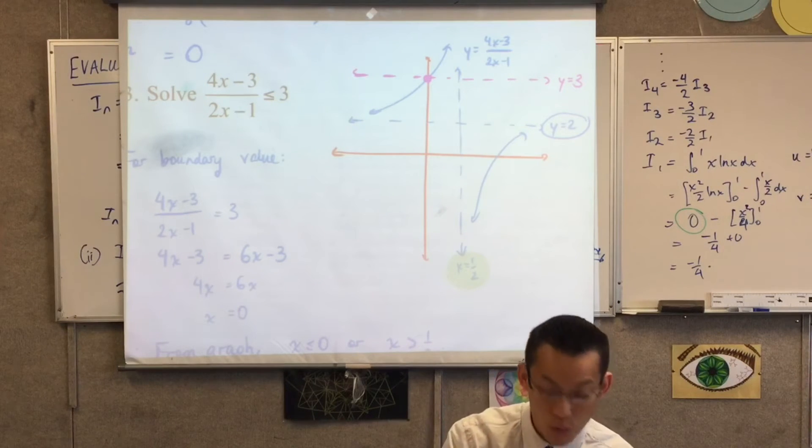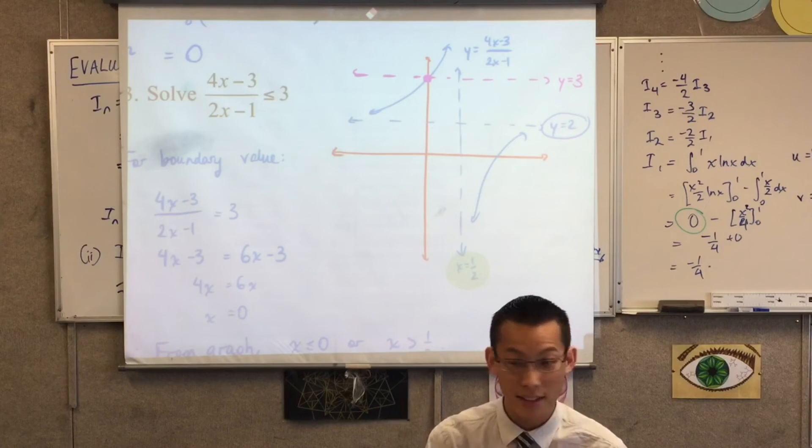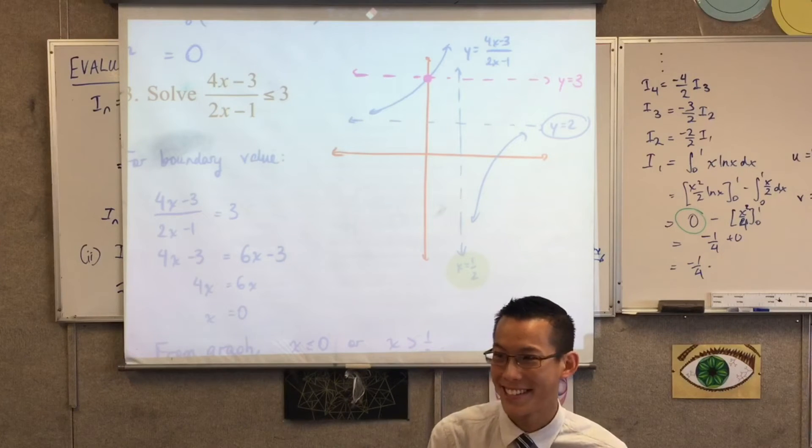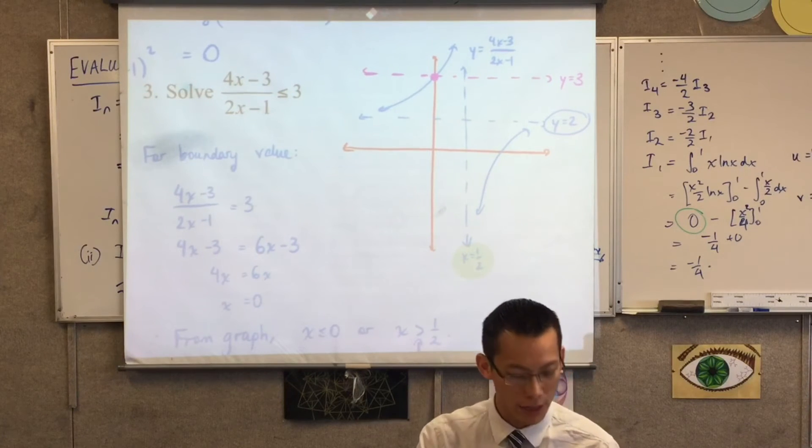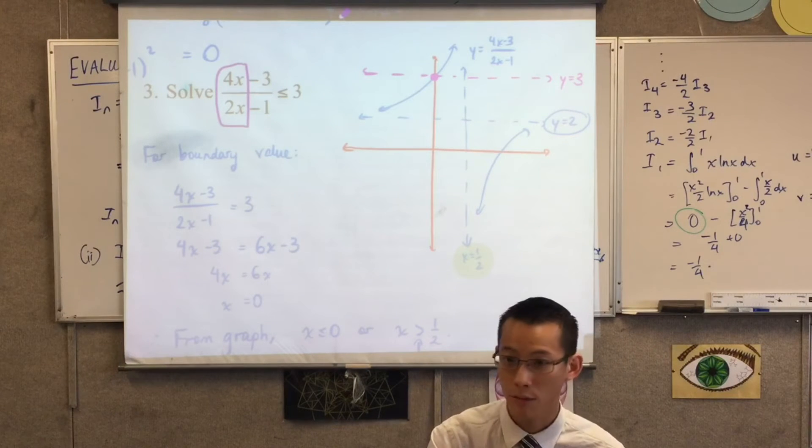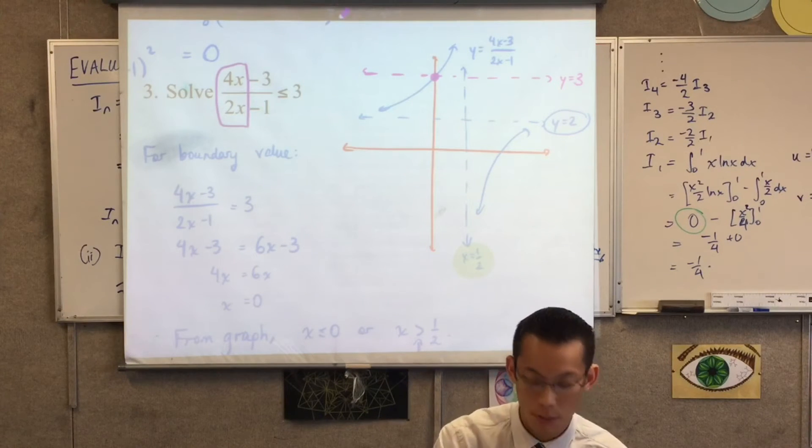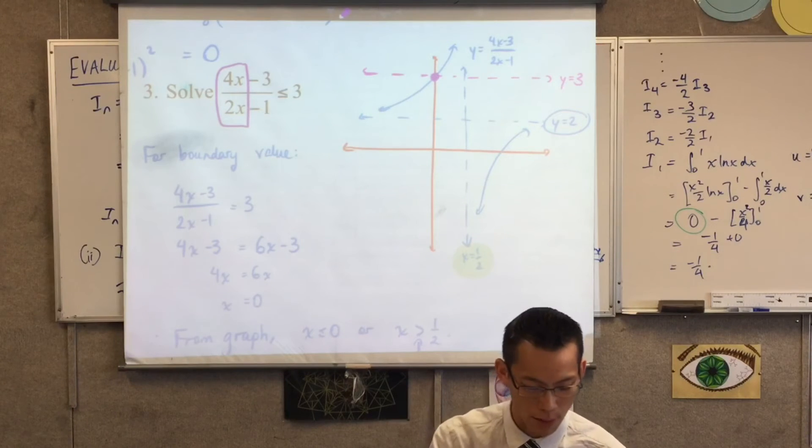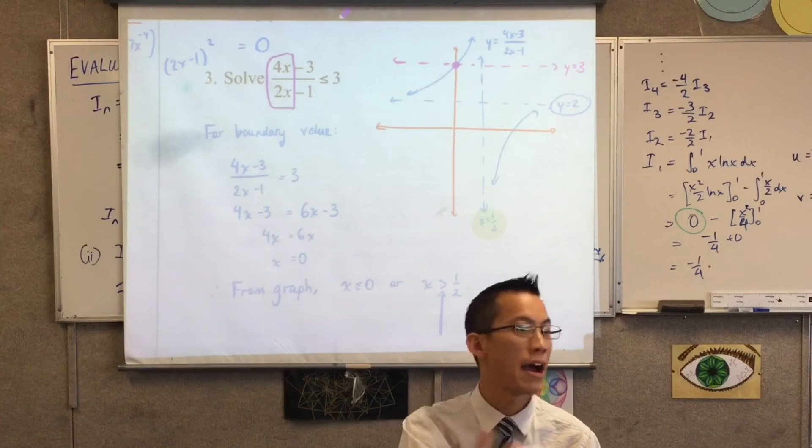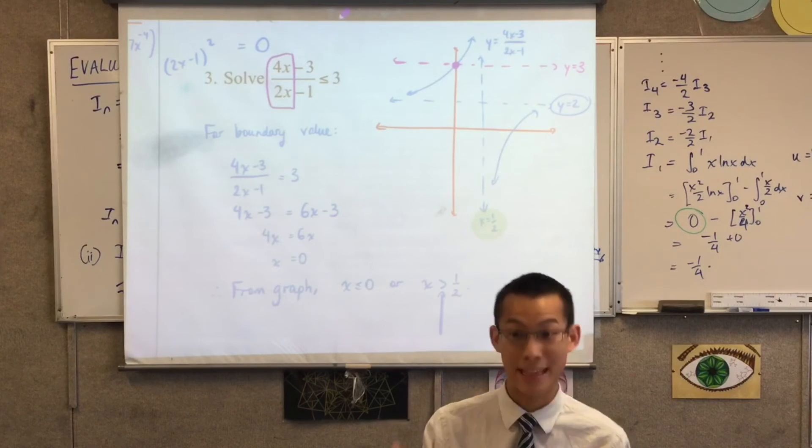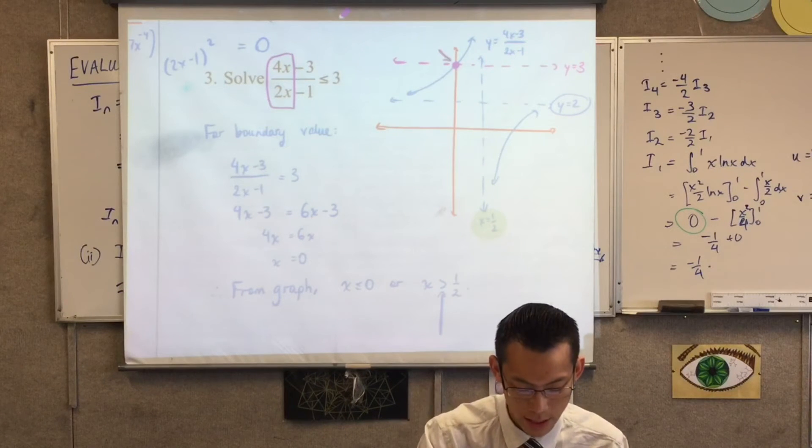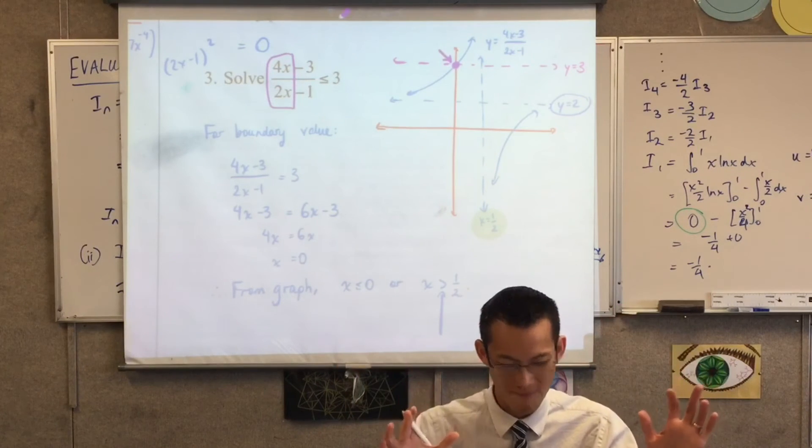The y-intercept is really easy to find. All you have to do is say x equals zero, which in this case happens to be very advantageous because that's an important point. You're putting in x equals zero so these two terms disappear. So you've got negative three over negative one and that's your point up there, which actually saves you a bit of effort.